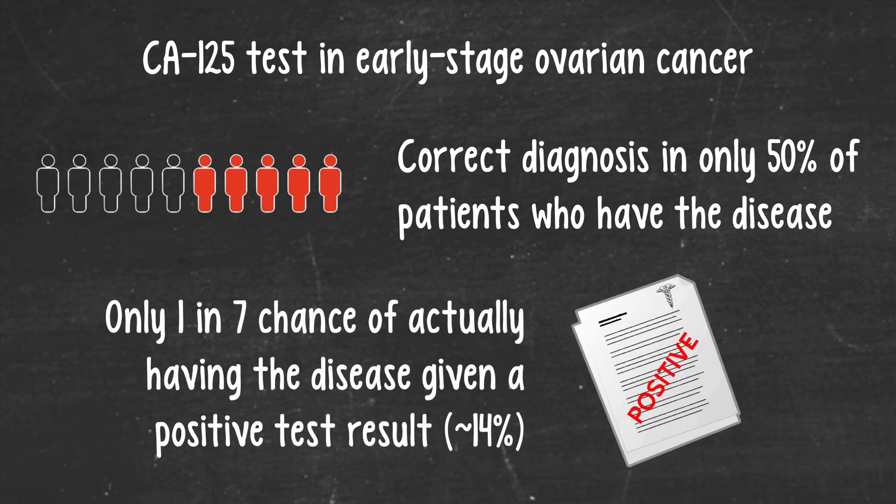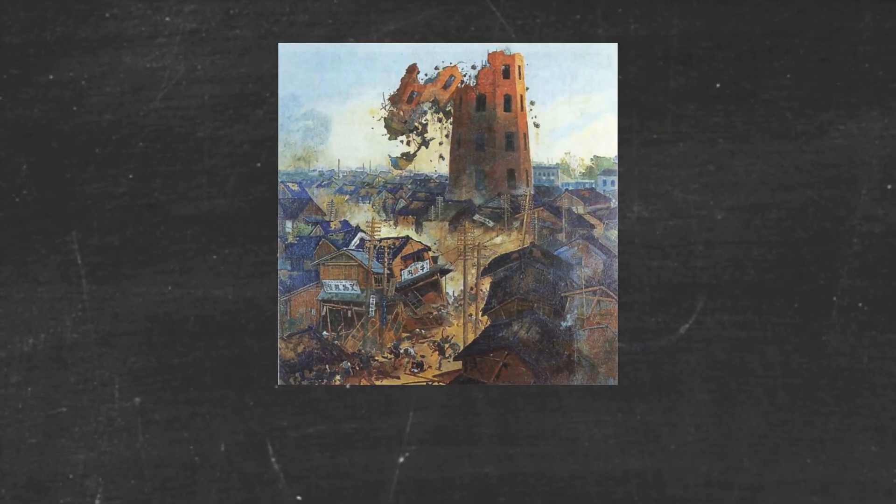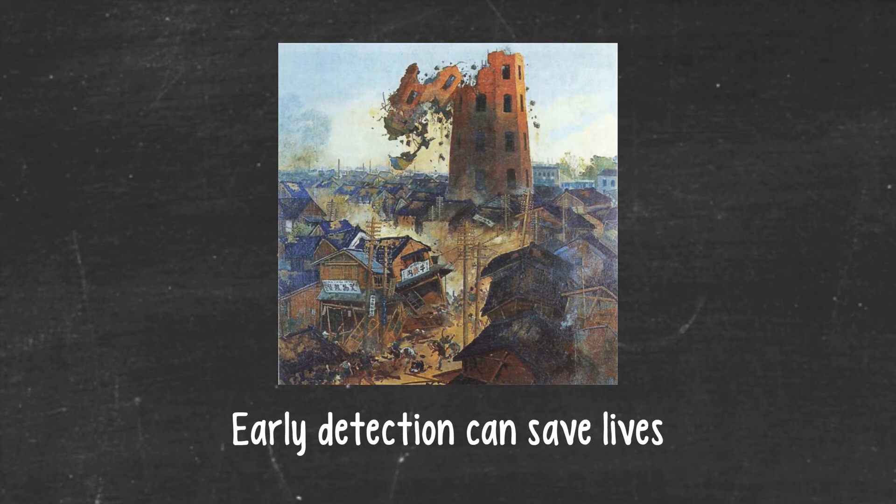And this presents a real problem to the physician. If the test you're using to diagnose the disease only starts to be accurate when the disease has progressed too far to have a good chance of doing anything about it, it's kind of like using falling buildings as an early warning for an earthquake. To follow the earthquake analogy a little further, you want to have some kind of early warning that will afford you a decent chance of getting people to safety before the buildings start falling down. So with ovarian cancer, as with earthquakes, early detection really can save lives.